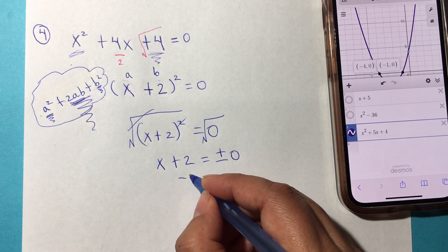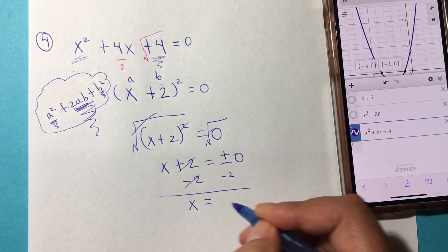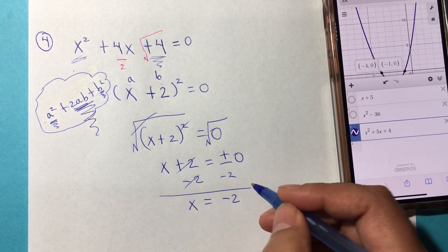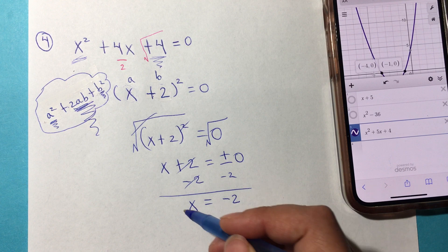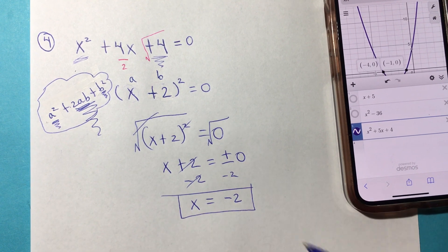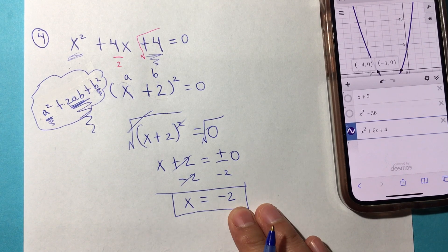Then we're going to subtract 2. x equals negative 2 ± 0. That means you're not adding any value. I want you to have this in mind. When it touches and it bounces, that means it has two solutions.